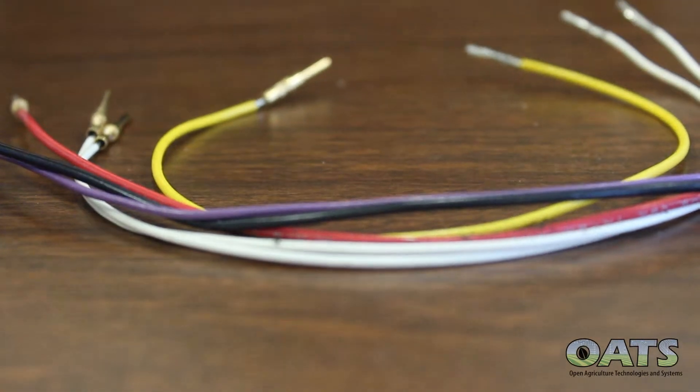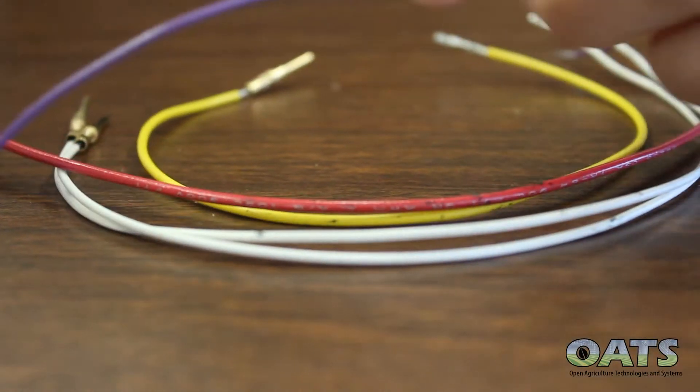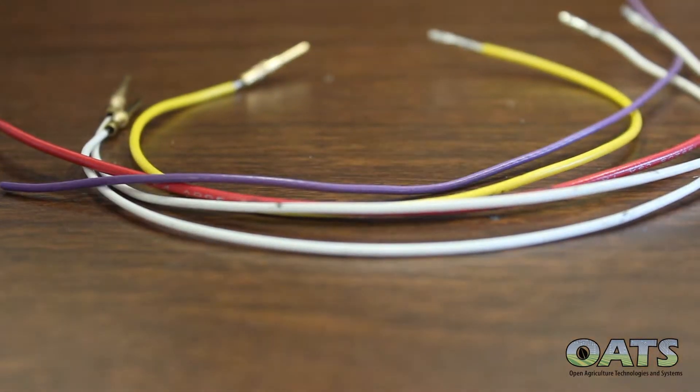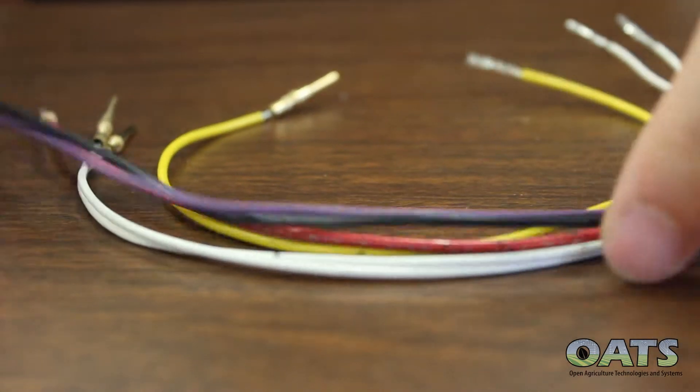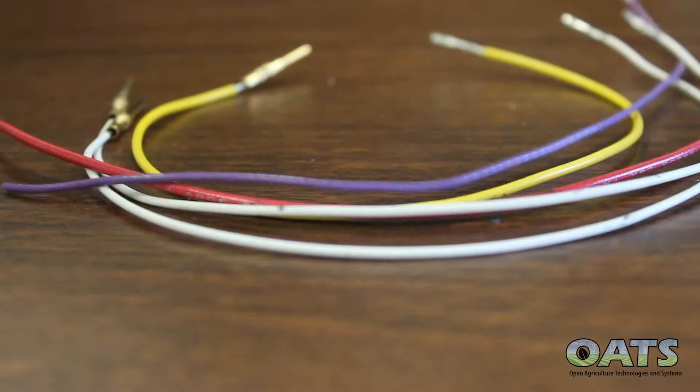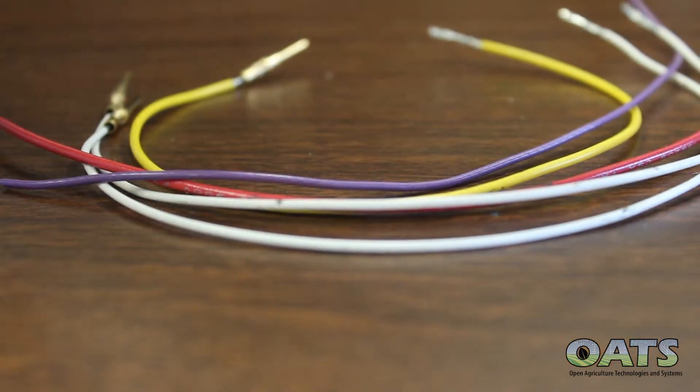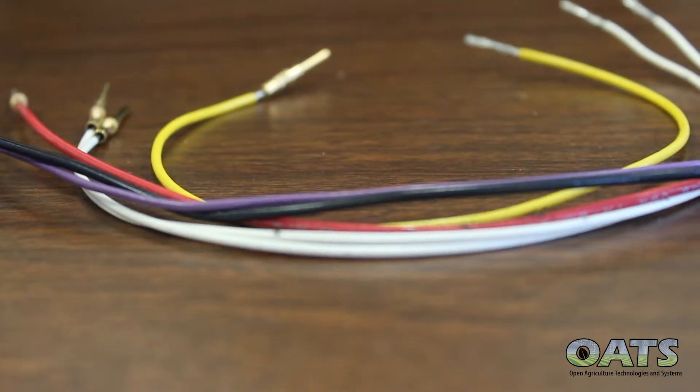You will need six wires of five different colors and they all need to be 10 inches in length at minimum. Two of the wires will have the same color since they stand for tractor bus CAN load and implement bus CAN load from the machine.